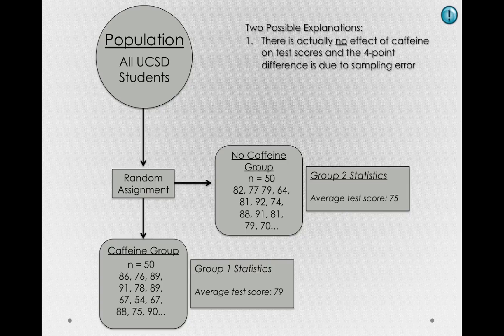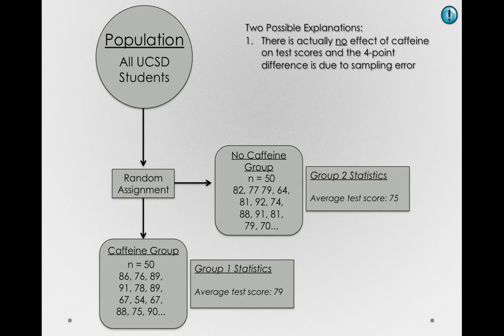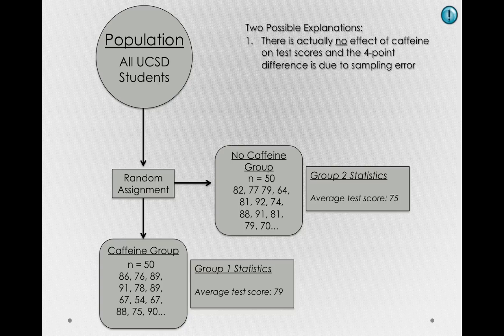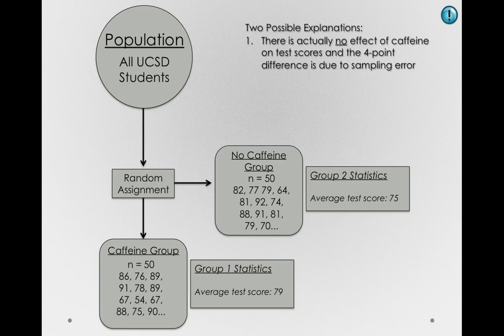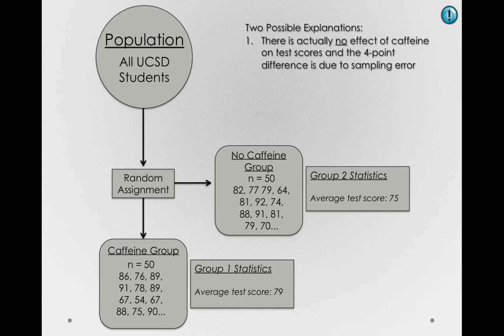The first possible explanation is there is actually no effect of caffeine on test scores, and the four-point difference we observed is due to sampling error. That's possible. We don't know how likely it is that sampling error would cause a four-point difference yet, but we can certainly say that that's a possibility. We know that sampling error will be present in any samples we take, so if we randomly assign people to groups, that's like taking two different samples, and those sample statistics won't necessarily agree with the population or with each other. So that four-point difference could be due to just sampling error alone.